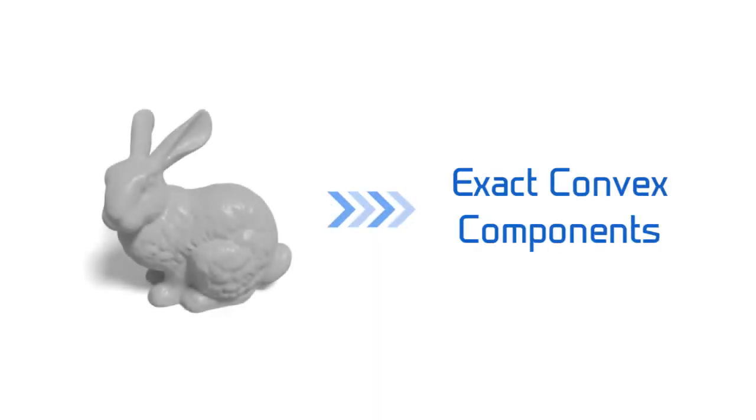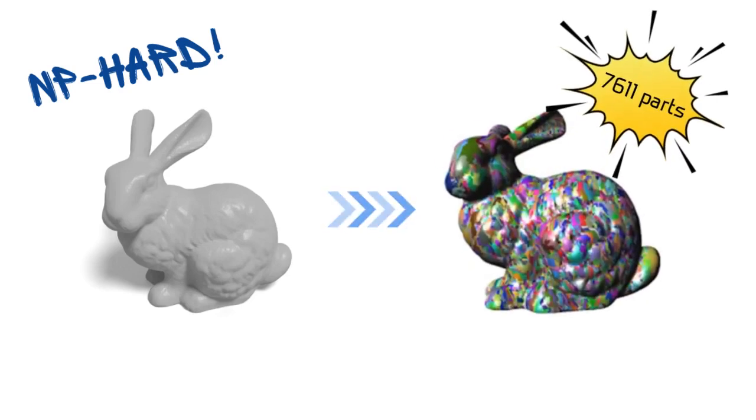Decomposing a 3D mesh into a minimum number of exact convex components is the Exact Convex Decomposition Problem, or ECD for short. ECD has proven to be NP-hard. Although many suboptimal heuristic algorithms have been proposed for ECD, they usually output a large number of small components, which prevent them from practical applications.